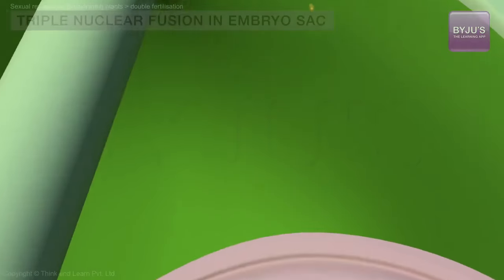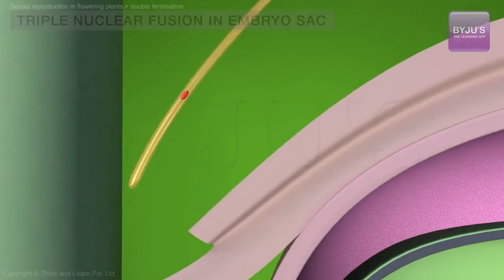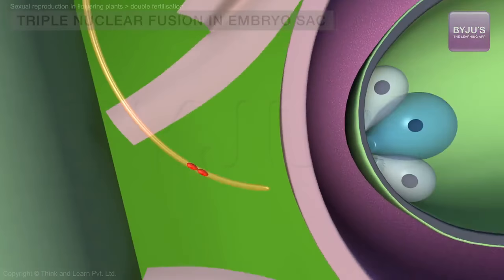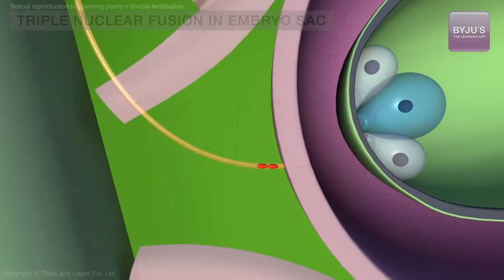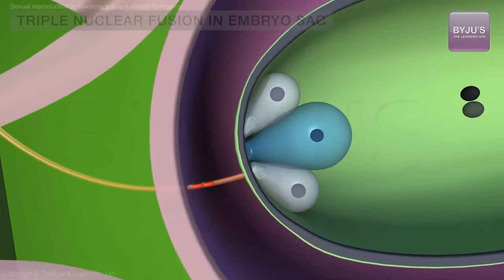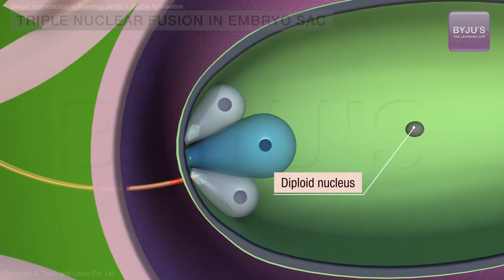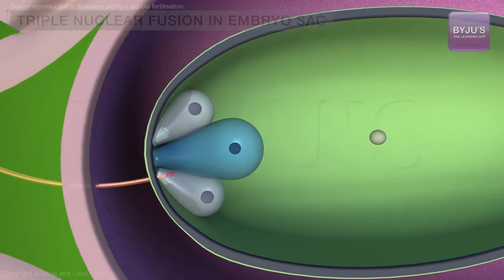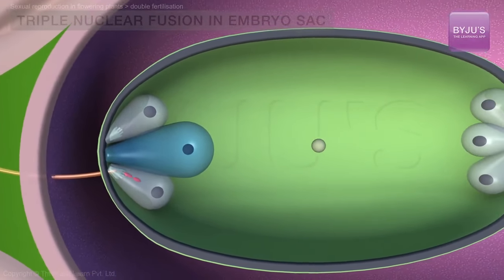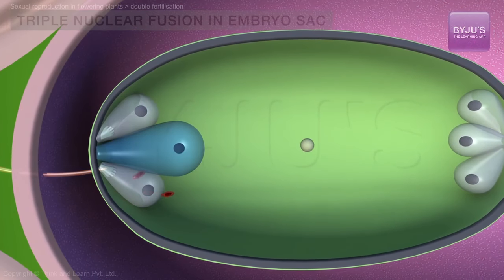As the male gamete approaches the embryo sac, its nucleus divides in two. And as the pollen tube reaches the ovule, the polar nuclei in the female gametophyte fuse into one diploid nucleus. The pollen tube bursts and releases the two male gametes into the cytoplasm of the synergid.